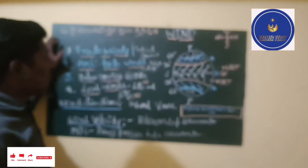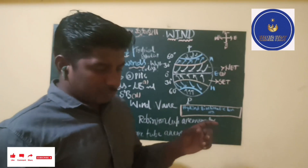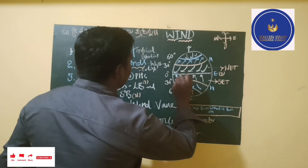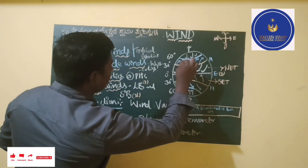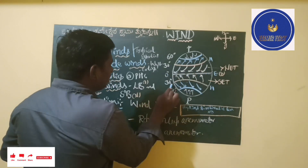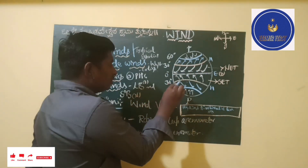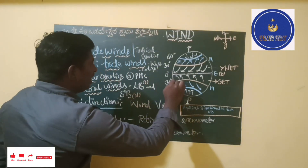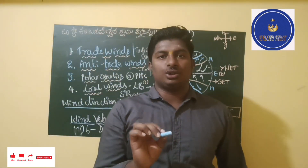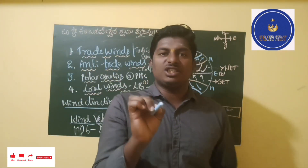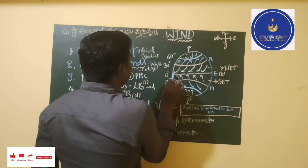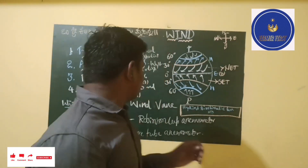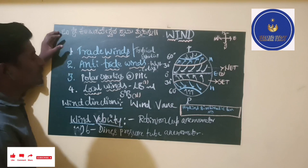Trade winds are those which always flow from high pressure belts at 30 degree north and 30 degree south towards the equator. In the northern hemisphere they flow from north to west; in the southern hemisphere they flow from south to west. They flow in this direction due to the Coriolis force — you need to remember this term. The Coriolis force makes the winds flow towards the equator in the case of trade winds.